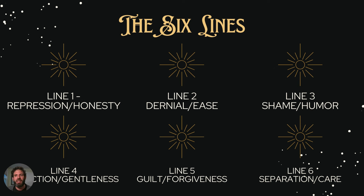Line five is guilt — deeper than shame. This is guilt for humanity, guilt for what our ancestors have done. Line five is the line of power, practicality, and leaders. That guilt drives people to manipulate others so that they feel better — that is why it's powerful. However, you can come from a different place with forgiveness: forgiveness of yourself, forgiveness of the world, for everything that has happened and everything we've done. When we can do that, we can lead from a place of deep and true power.